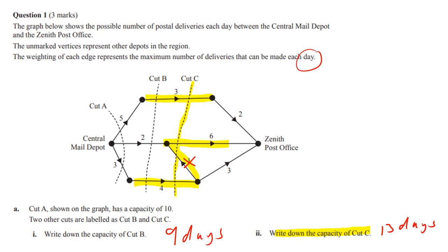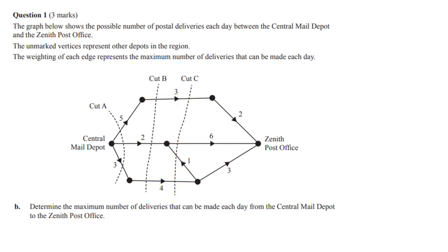A lot of people missed the backflow — there's always going to be backflow, so look for the backflow. We already worked out that cut B was 3 plus 2 plus 4, giving us 9. Cut C was 3 plus 6 plus 4 (not the 1), giving us 13. And cut A is 5 plus 2 plus 3, which is 10. So our winner so far is 9.